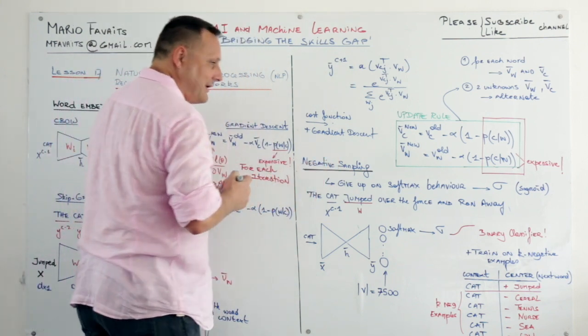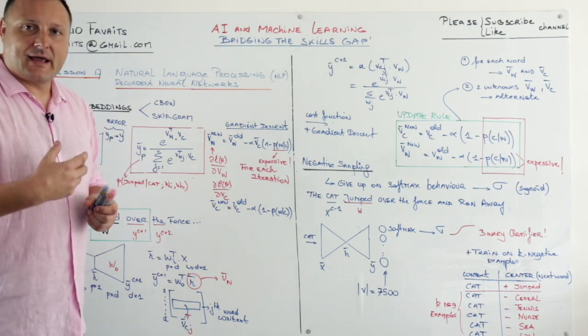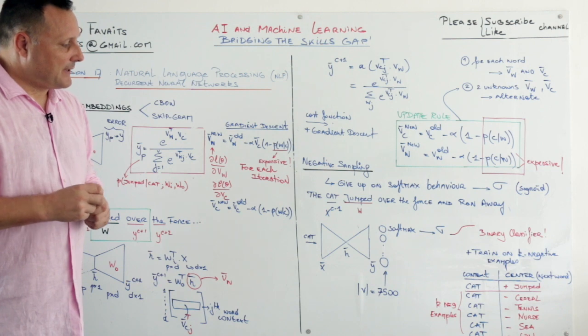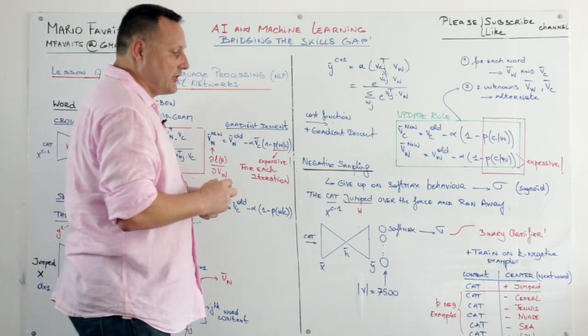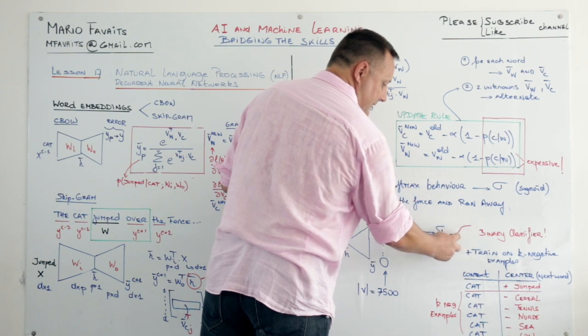And what is negative sampling? Well basically you are going to give up your softmax character and you are going to replace it with a sigmoid function and make it a binary classifier.